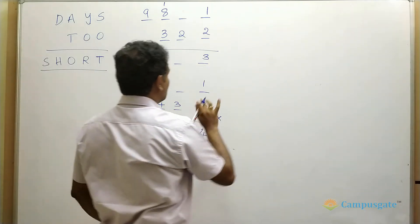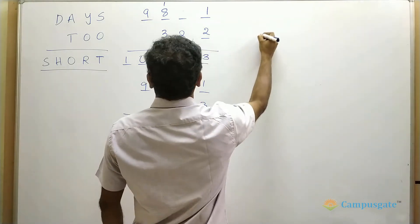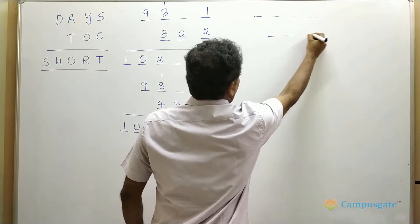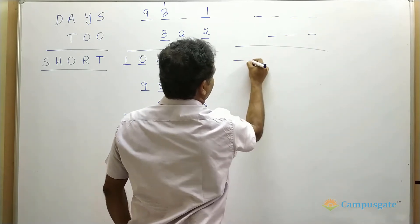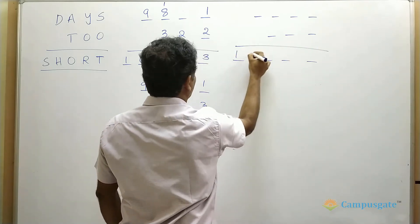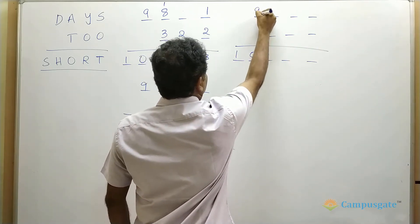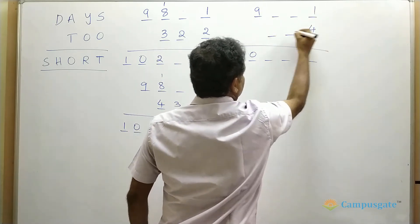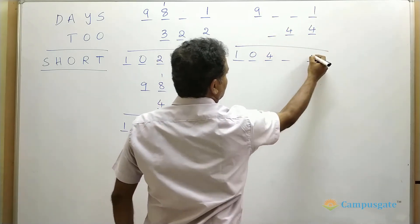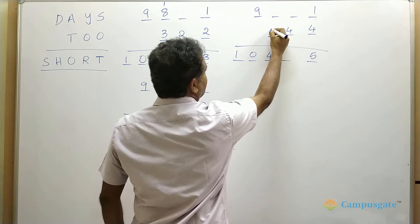Now let us put O equal to 4. So let us substitute all the known values here. Just put 4 here. If you put 4 here the value of T will become 5.